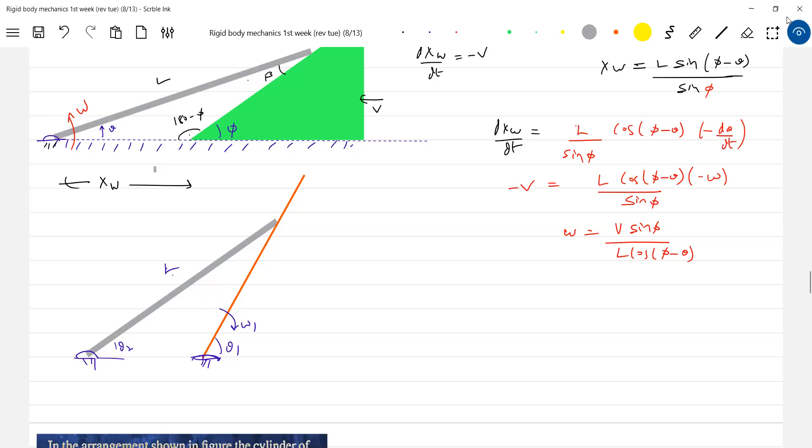Okay, find the angular velocity. Find angular velocity of the other rod. Both are hinged here, both are hinged.